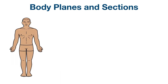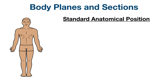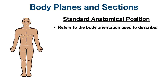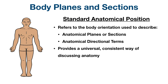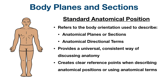In order to understand the different body planes, we need to learn what the standard anatomical position is. The standard anatomical position refers to the body orientation used to describe things like anatomical planes or sections, as well as anatomical directional terms. It basically provides a universal, consistent way of discussing anatomy and creates clear reference points when describing anatomical positions or using anatomical terms.